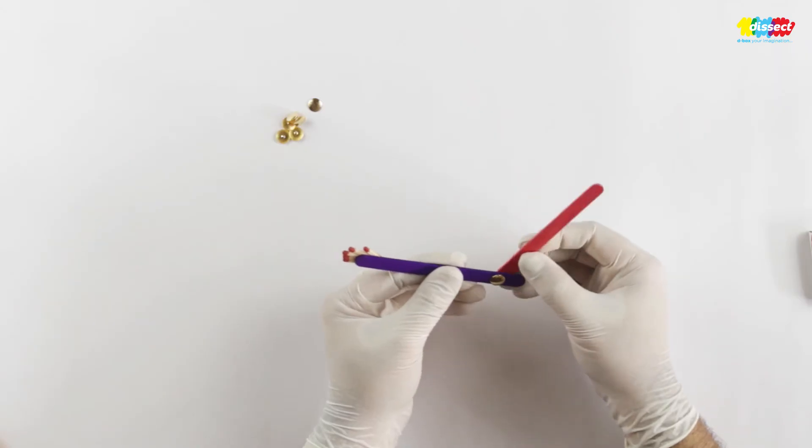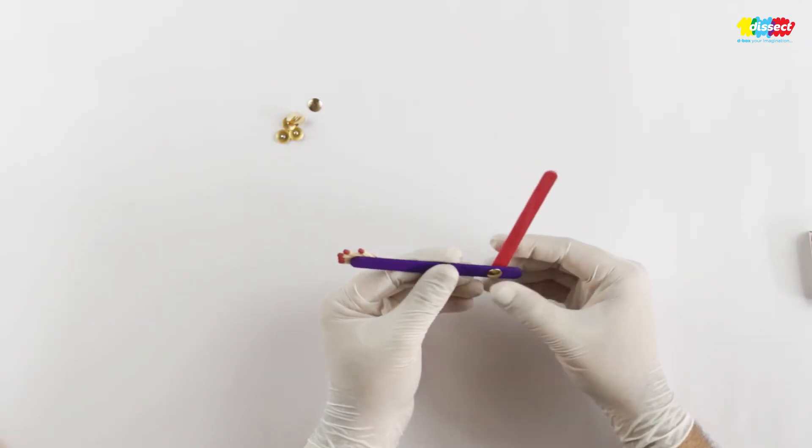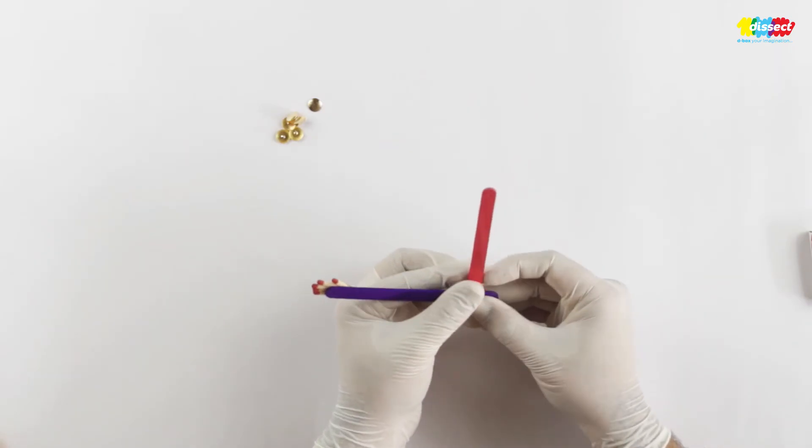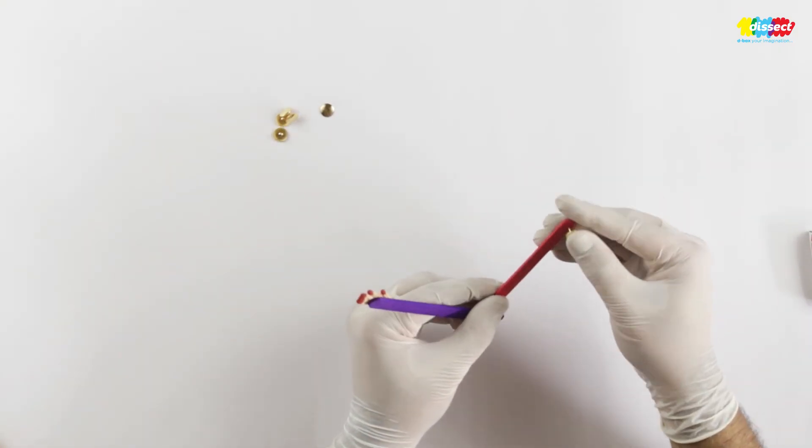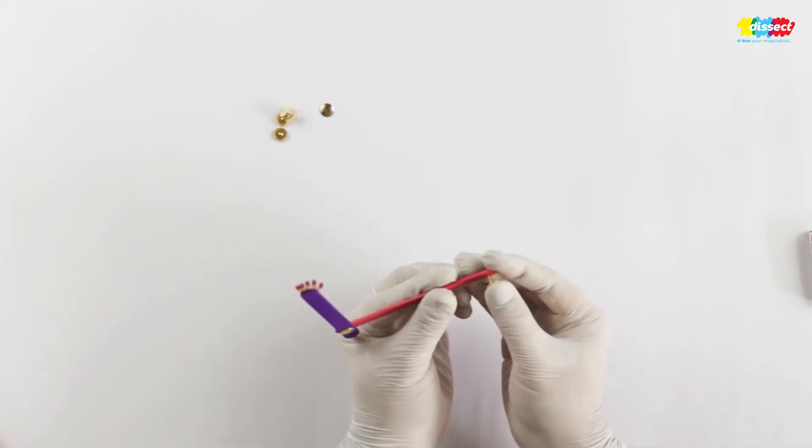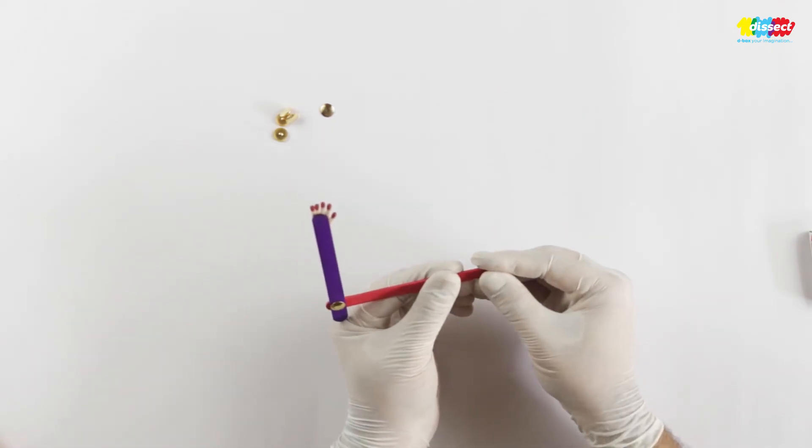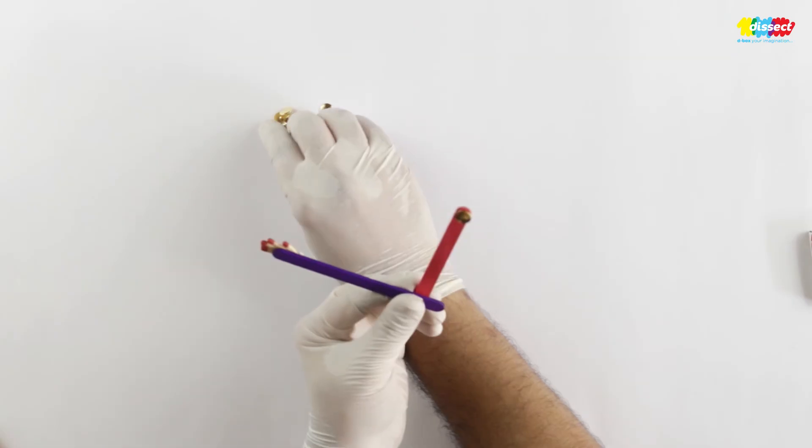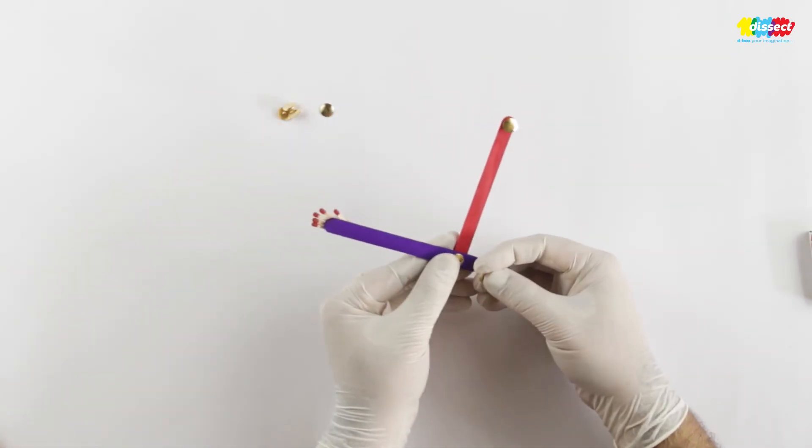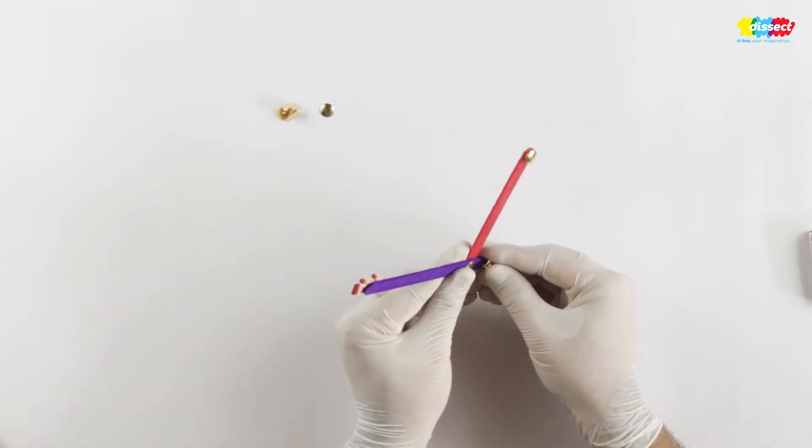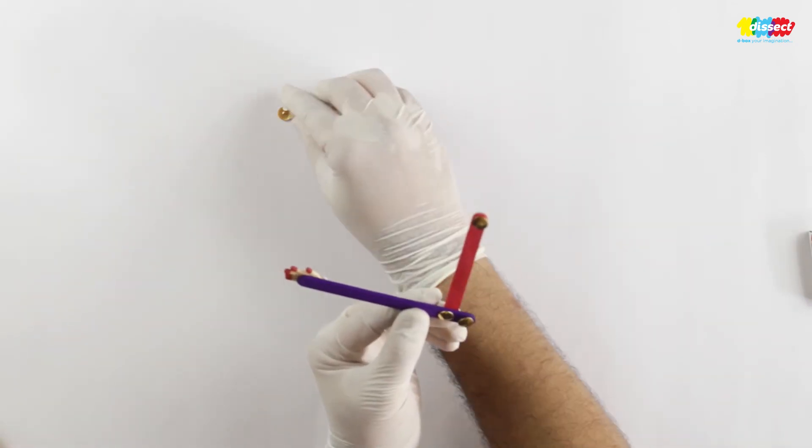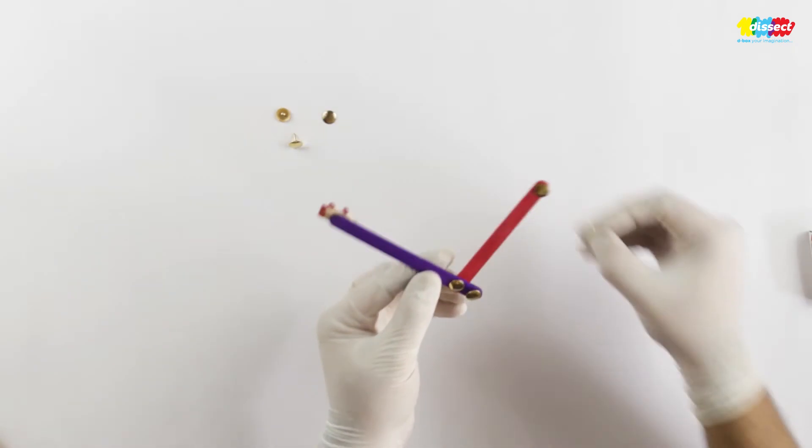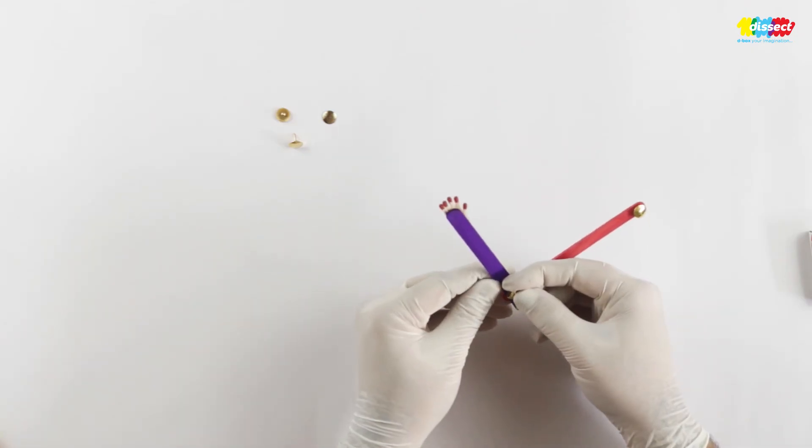So we have a working model of an arm. Now what I am going to do is I will affix one pin here on the top, like this. I will have one more pin at the end like this, and I will have one last pin somewhere around here.